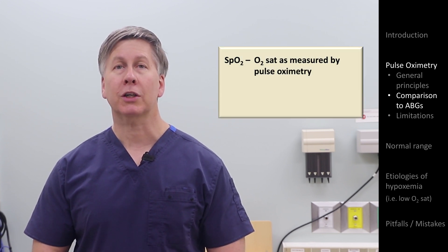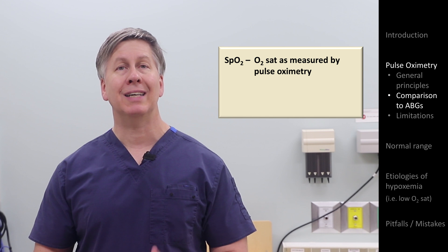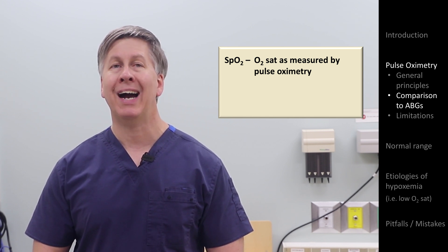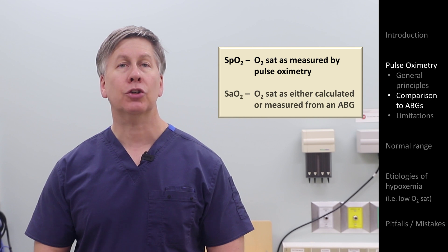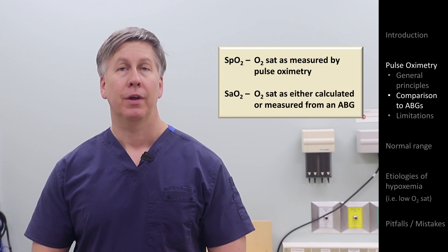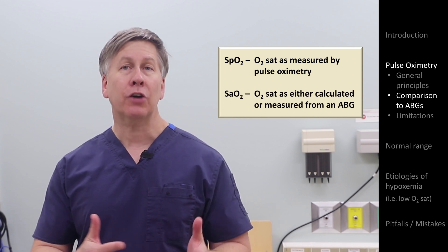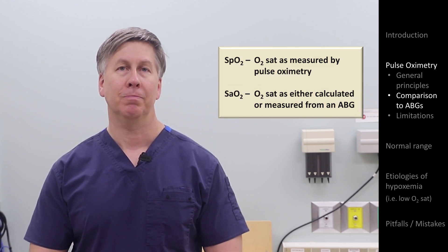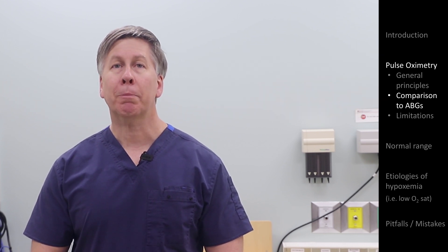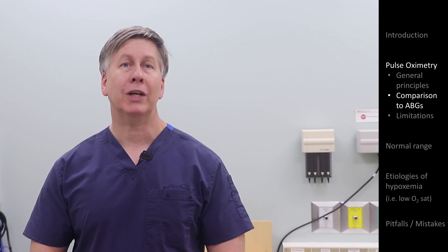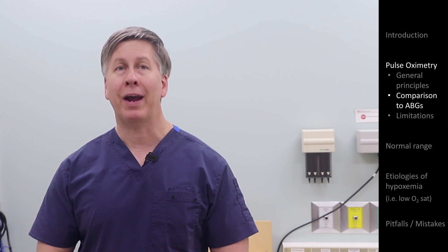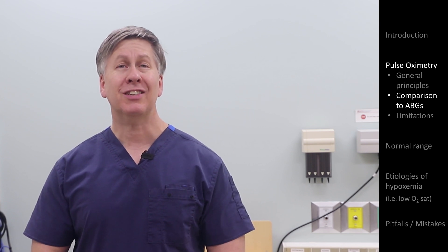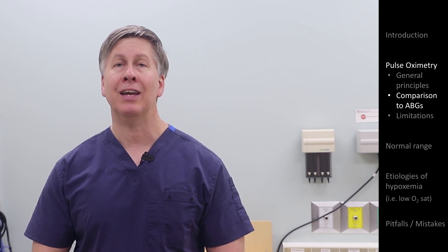O2 sat as measured by pulse oximetry is referred to as SpO2, whereas O2 sat as measured or calculated from an ABG is called SaO2. The fact that both measured and calculated ABG O2 sats share the same term is suboptimal. There is also something called pulse co-oximetry, which is a non-invasive way to measure methemoglobin and carboxyhemoglobin, but these devices are very expensive and uncommon.